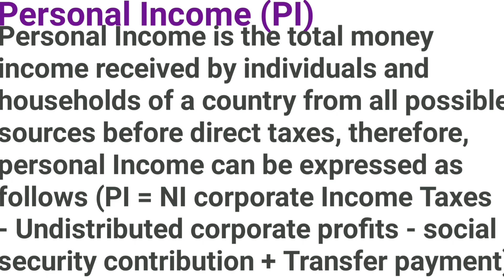Personal income is the total money income received by individuals and households of a country from all possible sources before direct taxes. Personal income can be expressed as: PI equals NI minus corporate income taxes minus undistributed corporate profits minus social security contributions plus transfer payments.